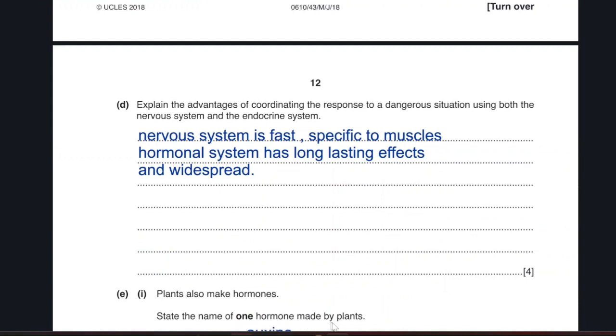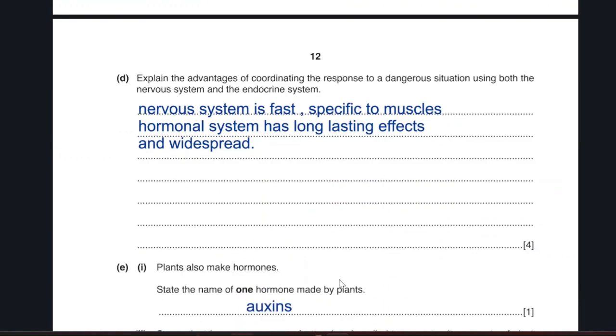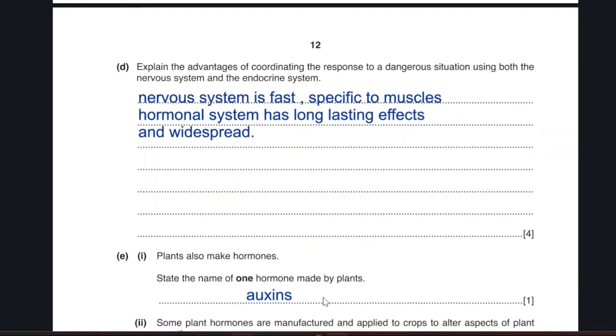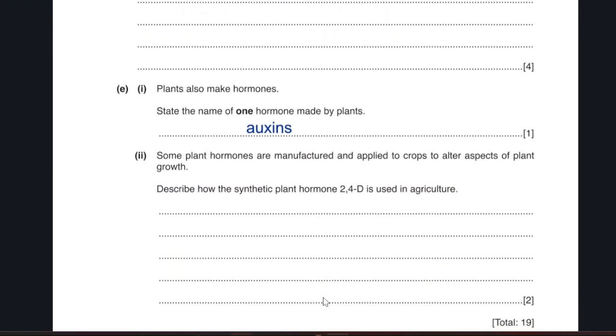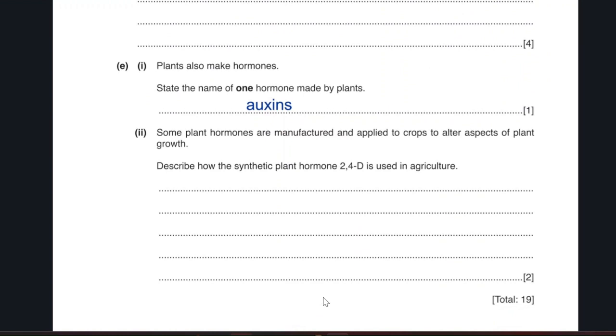Plants also make hormones. State the name of the hormone made by plants. Plants make auxins which helps it to grow. The last question is cancelled because it's the old syllabus. Cancelled.